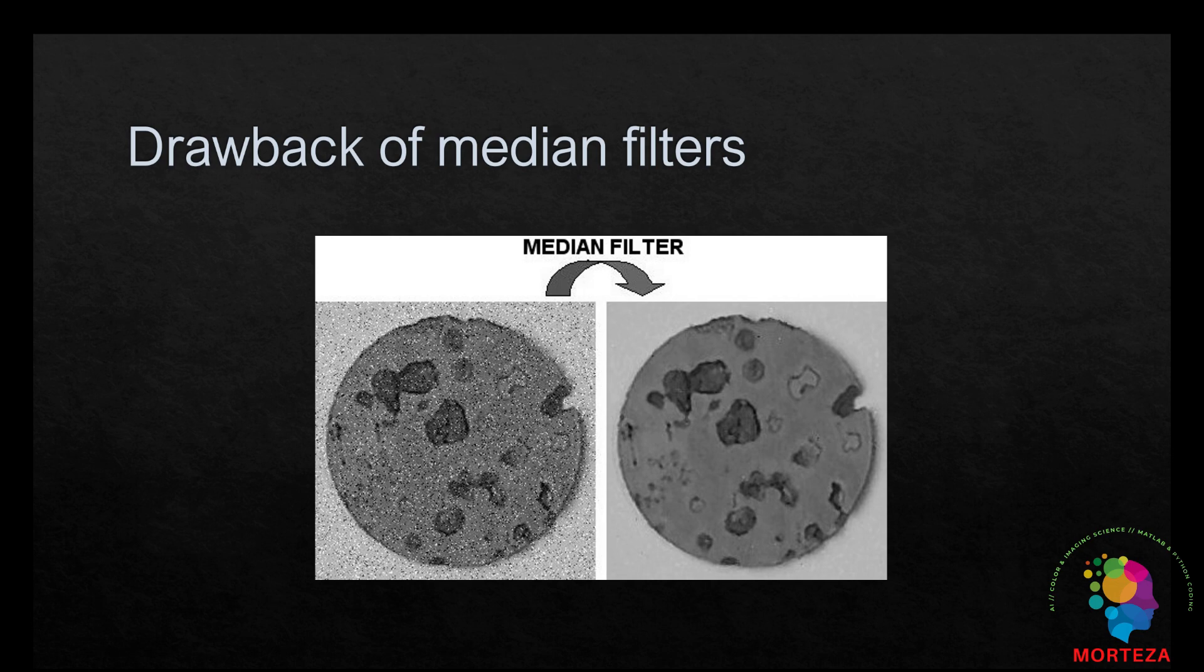How can we get rid of the speckles, but at the same time, keep the image sharp? What is the solution to this problem? As you can see here, the image is not as sharp, but we want to keep the image as sharp as we can, but get rid of the noise.